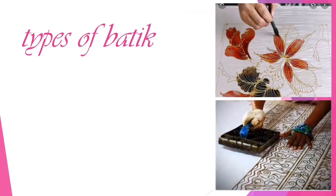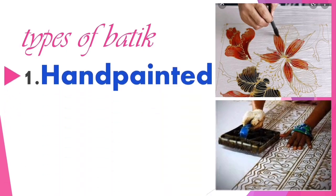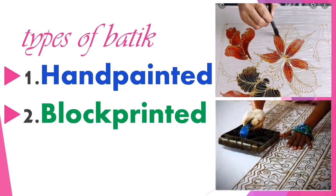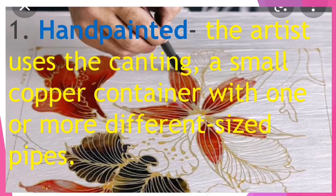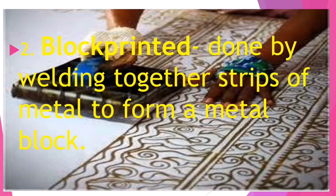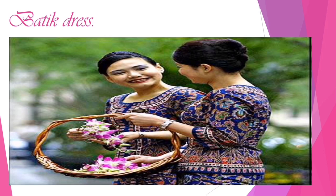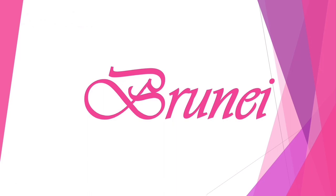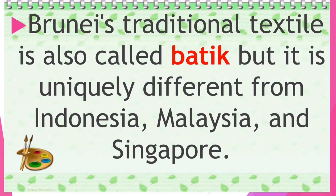Batik has two types. The first is hand-painted, where the artisan uses the canting — a small copper container with one or more tubes of different sizes. The second is block-printed batik, which is done by welding together strips of metal to form a metal block.